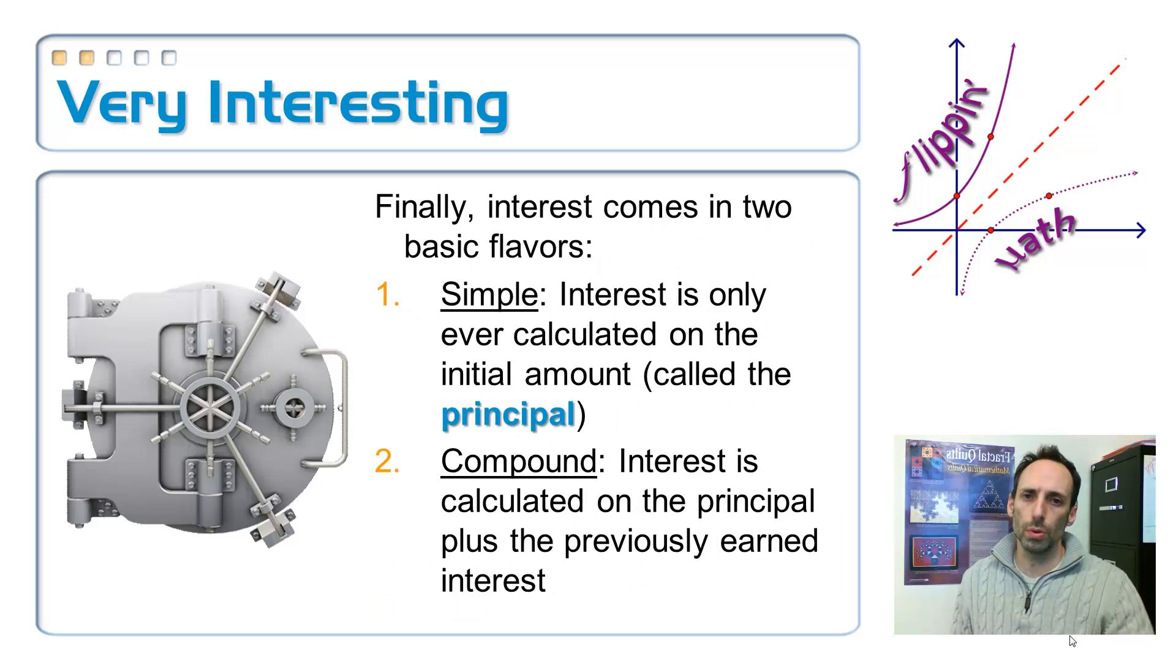Okay, so interest comes in two kinds. First kind is simple interest. It's very, very simple. Your interest is only computed on your principal. The word principal means the initial amount, the original amount that you started with, okay? And this is the kind of interest that you learn to compute in, like, sixth grade, and it's very unrealistic. Like, nobody really uses simple interest. They use the second kind, compound.